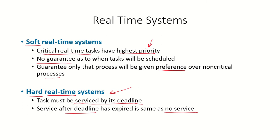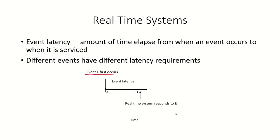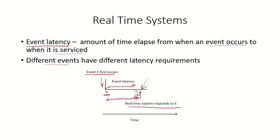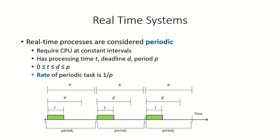Suppose an event occurs at time t0 and by the time the real-time system responds to this event it takes until time t1. The time that has elapsed from when the event occurs to when it was serviced is referred to as the event latency. The real-time process occurred at time t0 but by the time it was serviced the time was t1 — this is the latency of a real-time system and it should be as minimum as possible. Different events have different latency requirements.